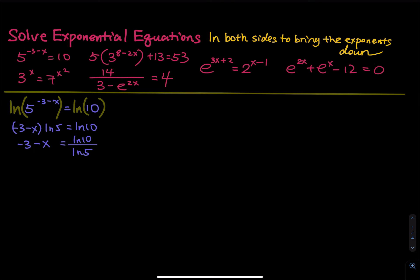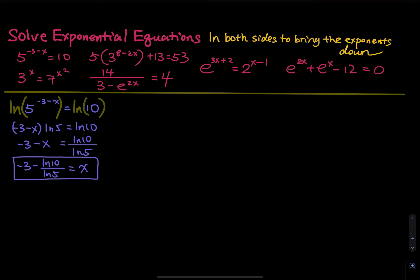We move the x to the right side and then we move the ln to the left side. So we have negative 3 minus ln10 divided by ln5 equals to x. And then this is our answer.